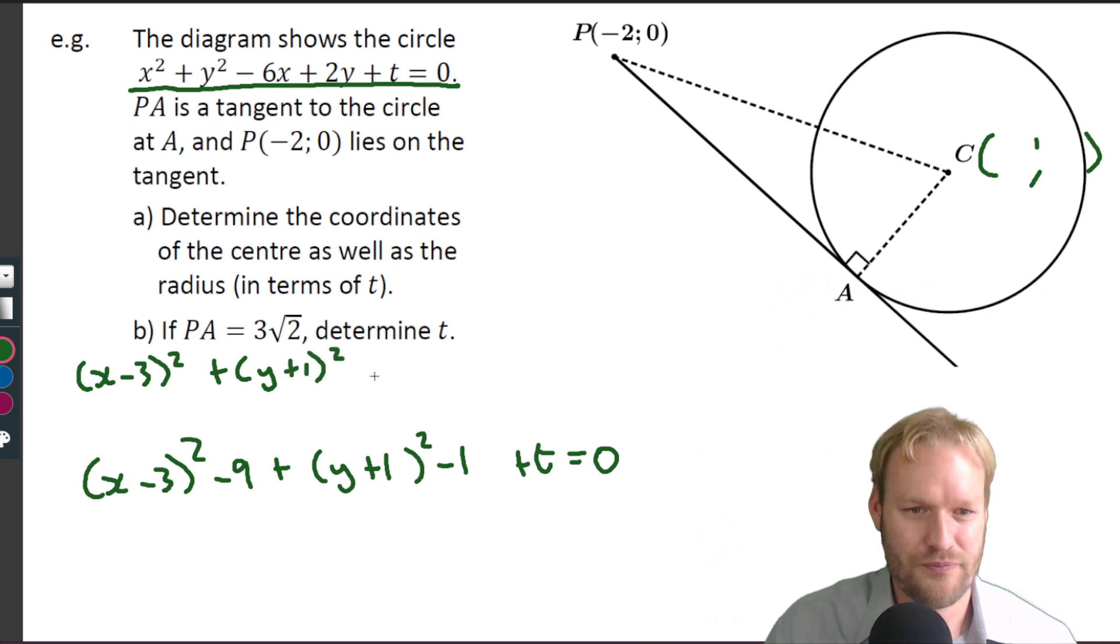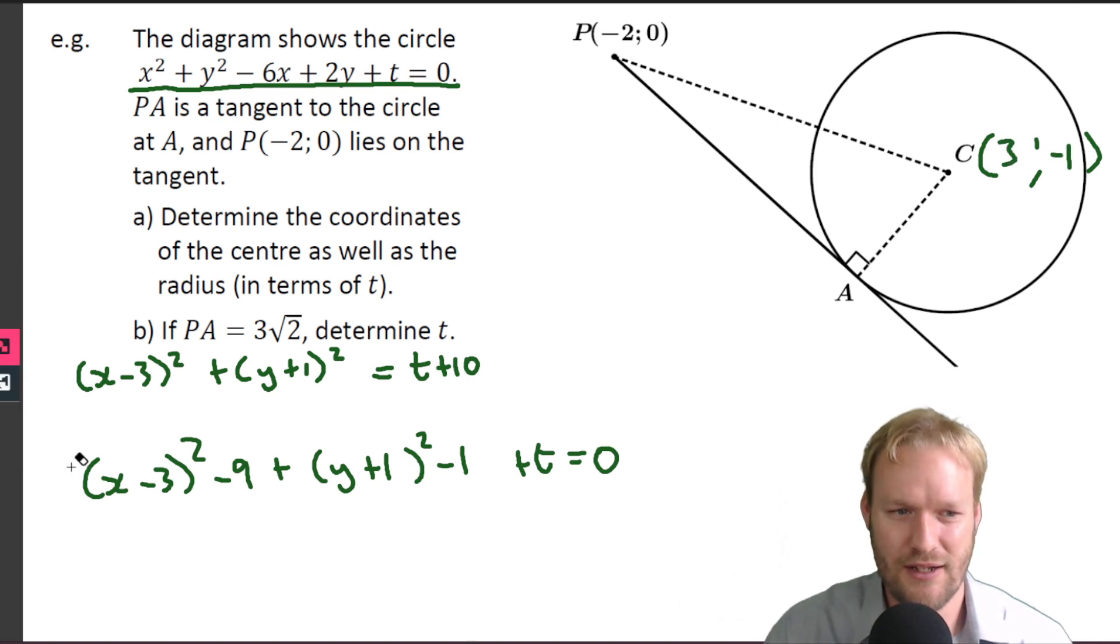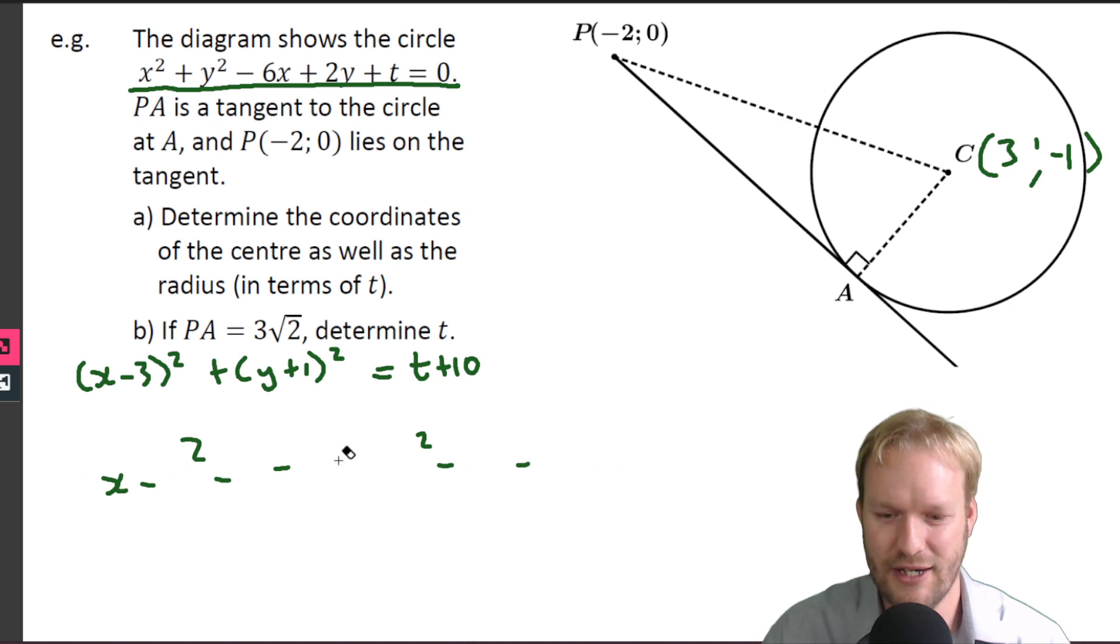So therefore (x - 3)² + (y + 1)² equals, well, we've got minus 10, so we got t plus 10. Okay, so we know that our center is at (3, -1).